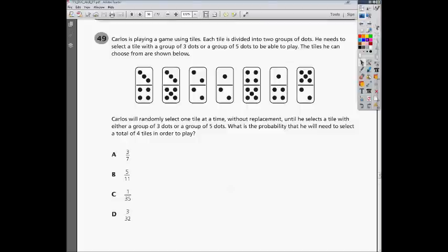Welcome. This is the Tennessee Algebra 2 End of Course Practice Test, number one, question number 49. Carlos is playing a game using tiles. Each tile is divided into two groups of dots. We call those dominoes where I come from, but dominoes are related to gambling. He needs to select a tile with a group of three dots or a group of five dots to be able to play. He's going to choose them one at a time without replacement. They want to know what the probability is that he'll need to select four tiles in order to play. Before we start, we should look at how many total tiles there are. There are seven total tiles.